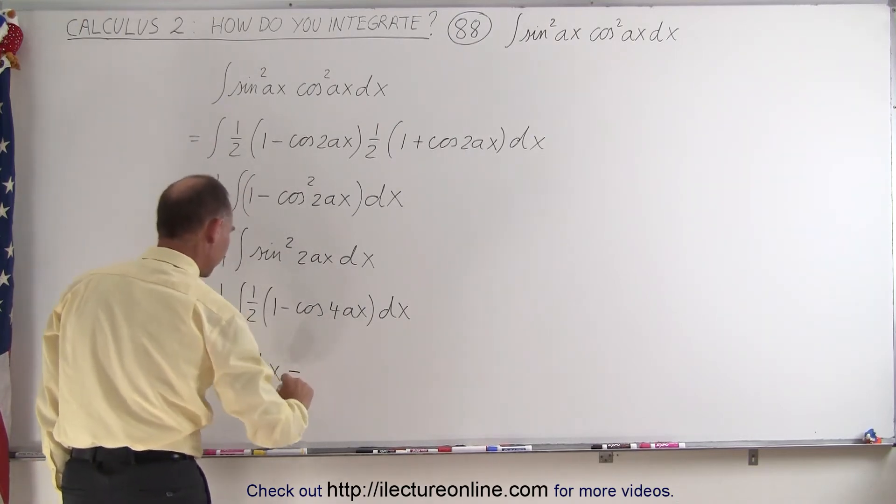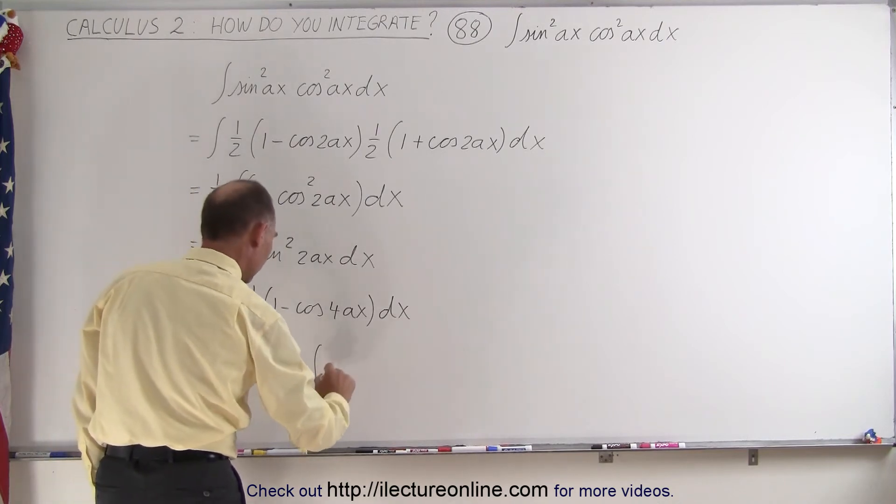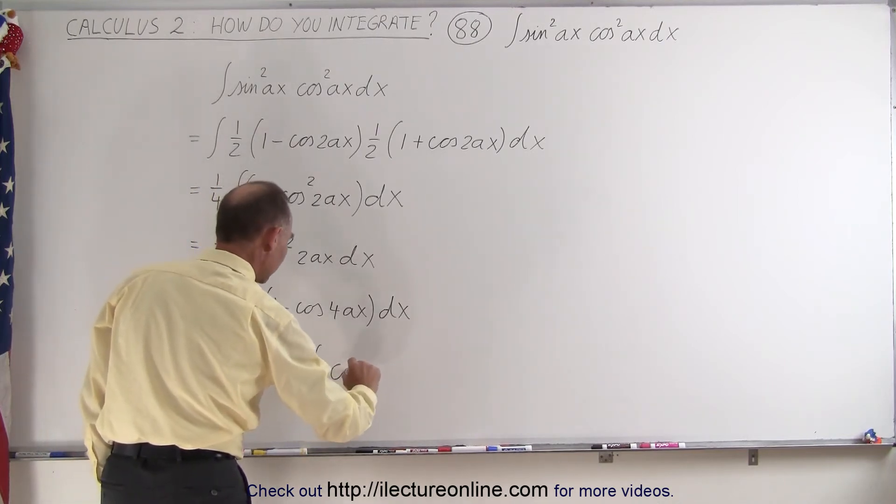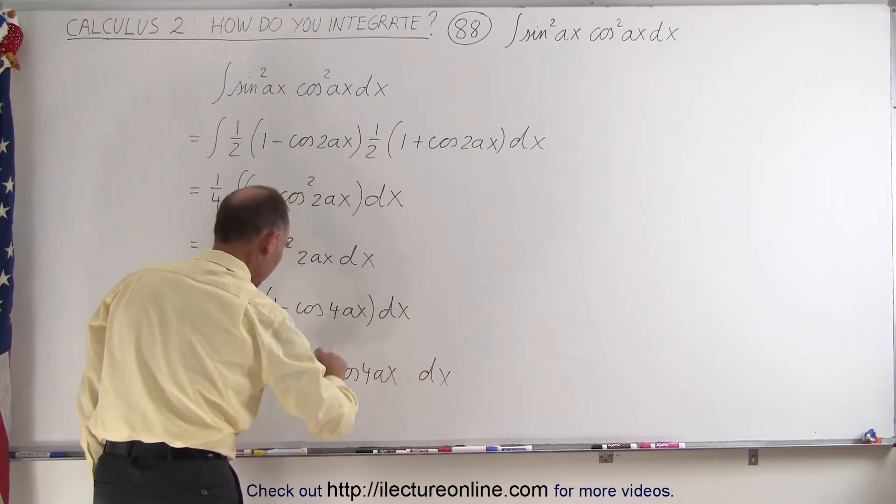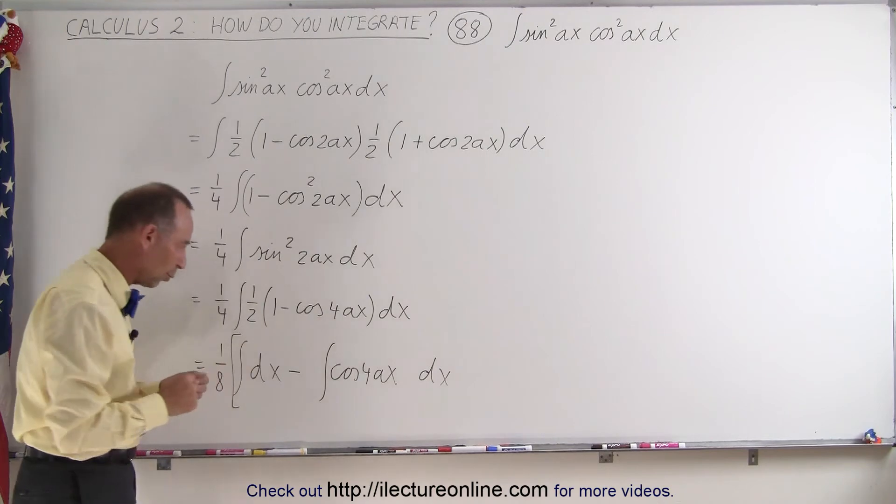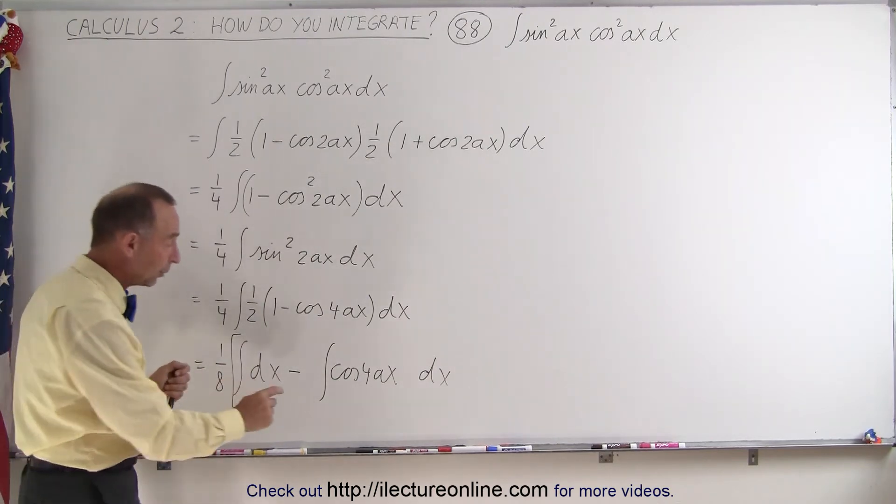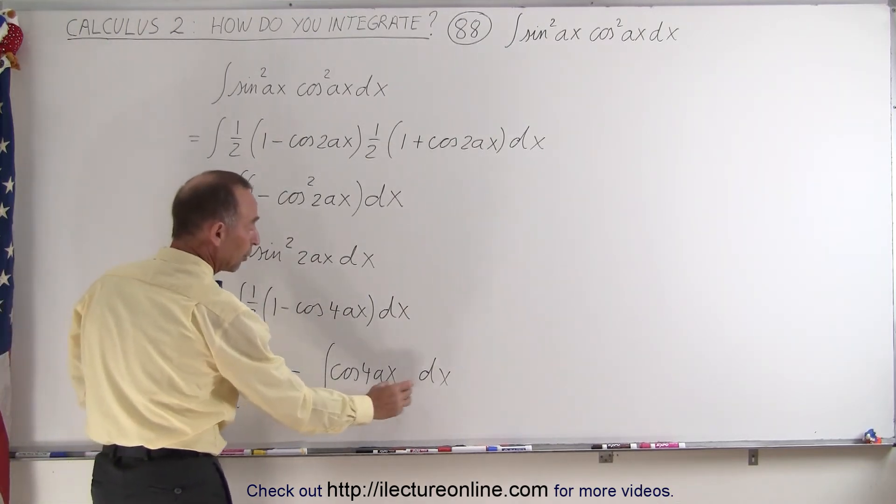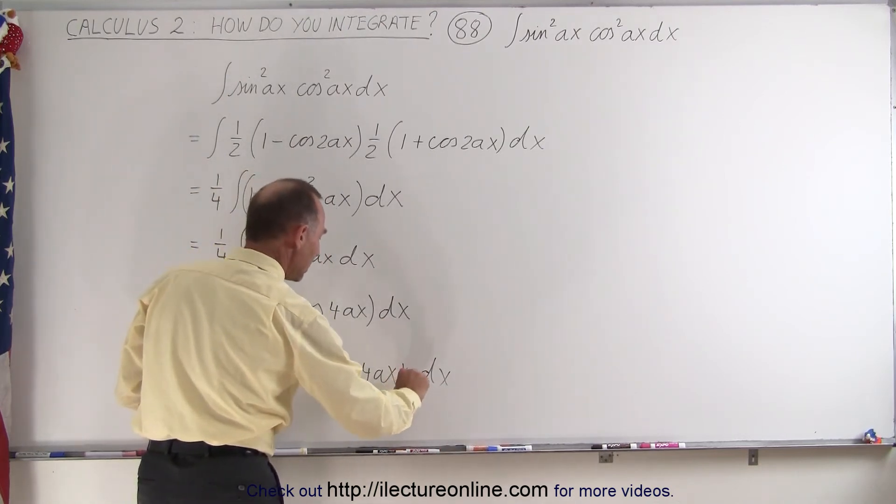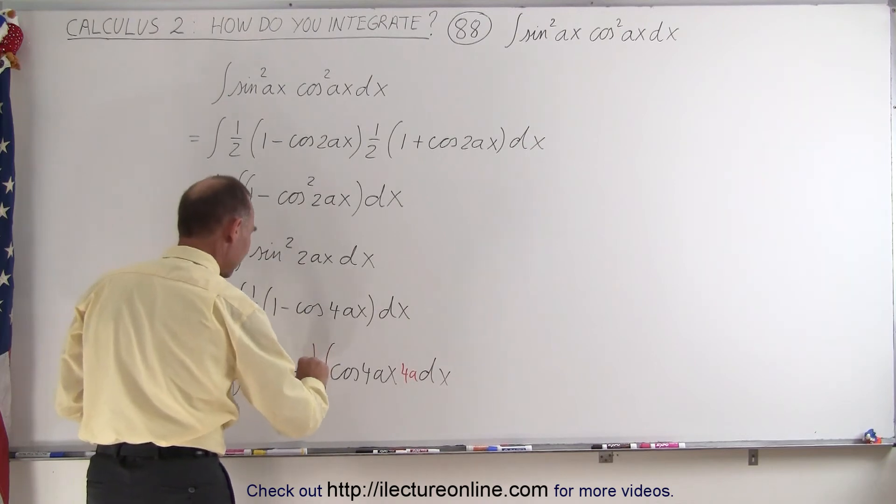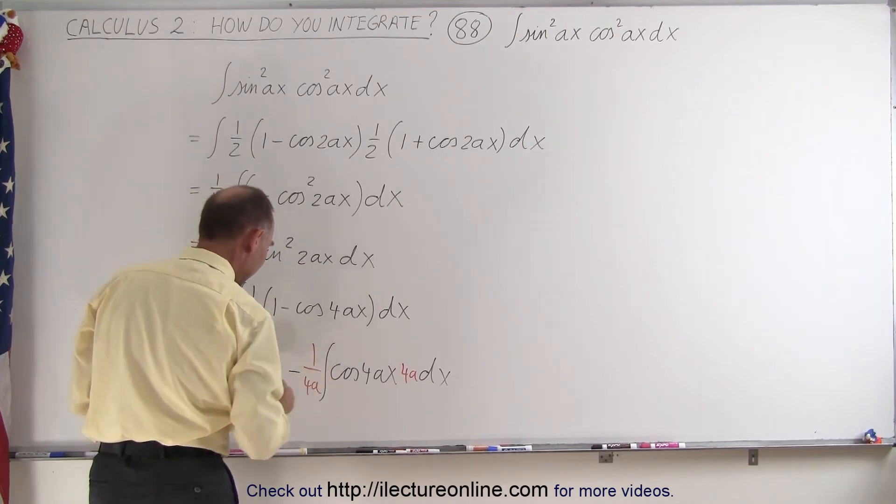And then minus the integral of the cosine of 4Ax times dx. I'm going to leave a little bit more room here, and you'll see in just a moment why, because when we try to integrate the cosine of 4Ax, we need the proper differential, which in this case is going to be 4A, and of course then we also have to divide by 4A, like this.